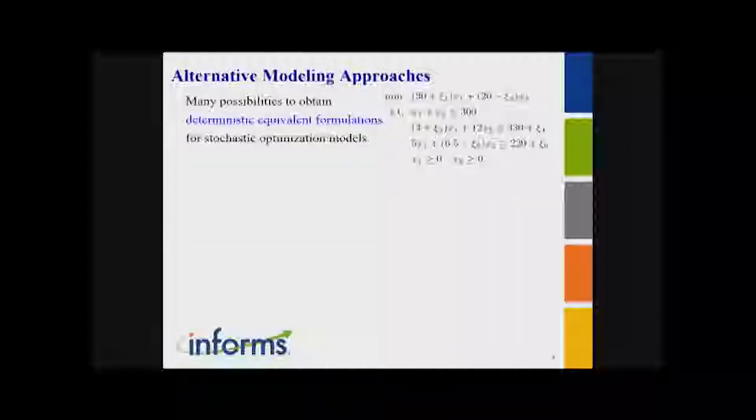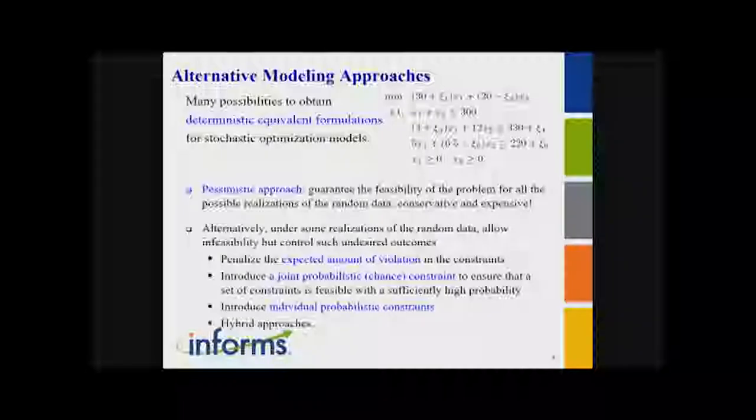Different from deterministic optimization, we have to do some extra work. We have to specify what we mean by optimality and feasibility of a given solution. In stochastic optimization, we obtain deterministic equivalent formulations. We can use many different approaches — for example, you can be a pessimistic decision maker and consider the worst possible realization, or you can relax constraints under certain realizations but penalize violations, or you can enforce a chance constraint which guarantees constraint satisfaction with high probability.